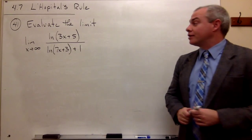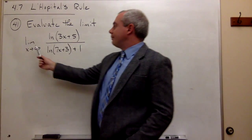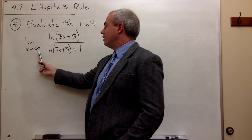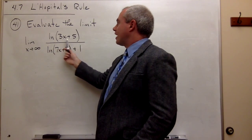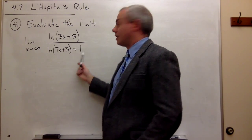In problem number 41, we'd like to evaluate the limit as x goes to infinity of ln of 3x plus 5 divided by ln of 7x plus 3 plus 1.